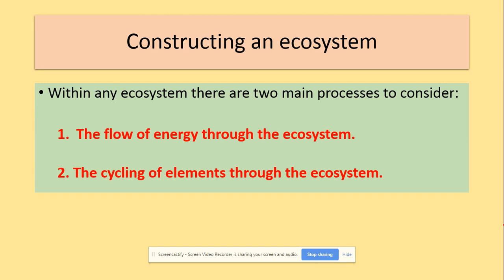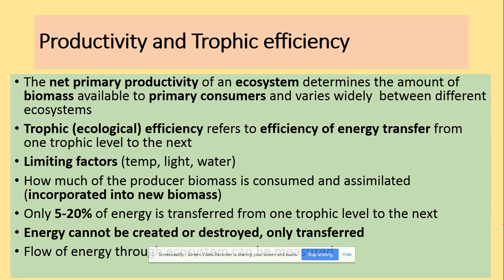When looking at the carbon ecosystem, energy will flow through the ecosystem and the cycling of elements — for example, the nitrogen cycle — will take place as well. The net primary productivity of an ecosystem determines the amount of biomass available to primary consumers and will differ between ecosystems. Trophic ecological efficiency refers to the efficiency of energy transfer from one trophic level to another, with limiting factors such as temperature, light, and water affecting biomass productivity.